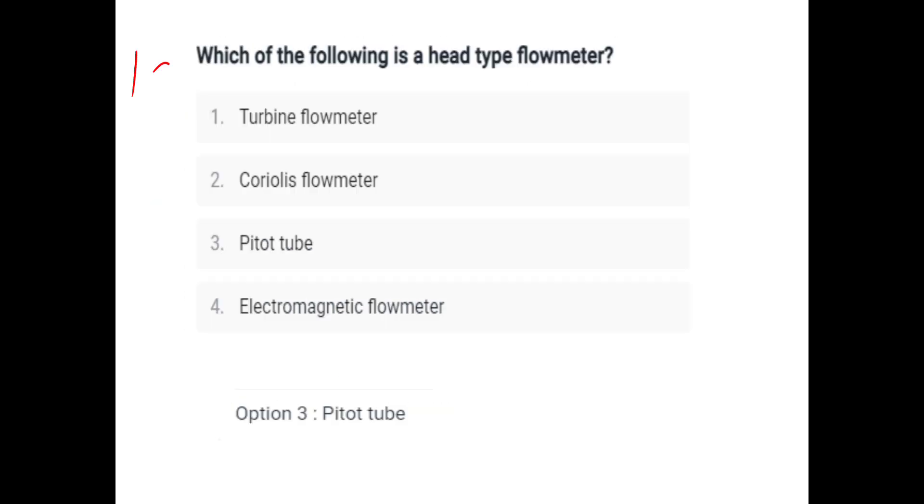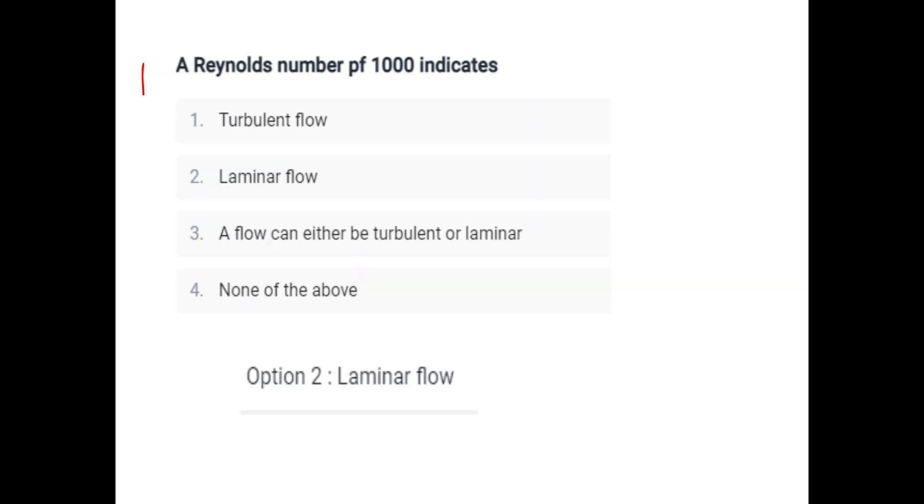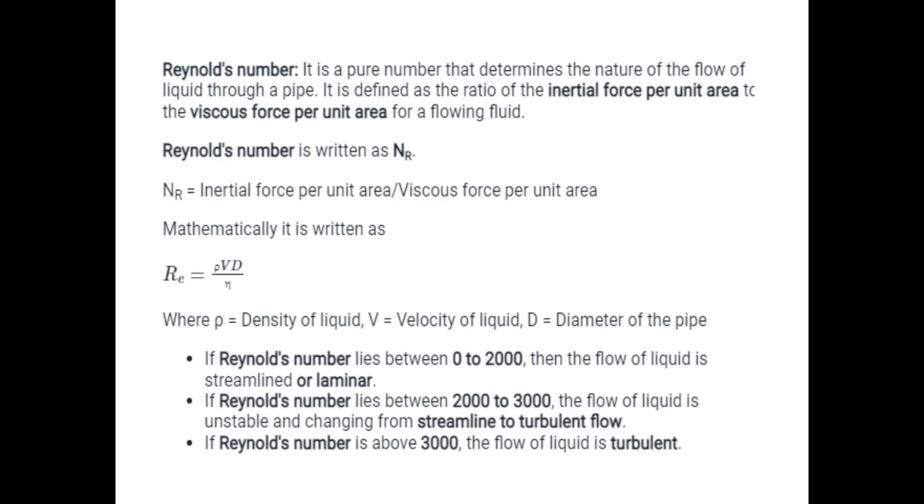Which of the following is head type flow meter. Reynolds number less than 1000 indicates laminar flow. Reynolds number is a pure number that determines the nature of liquid flow. It is defined as the ratio of inertial force per unit area to viscous force per unit area for a flowing fluid. R equals rho VD divided by eta.